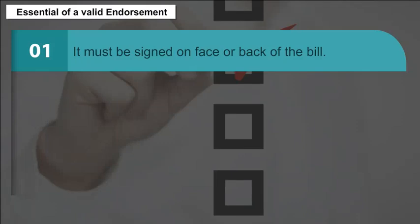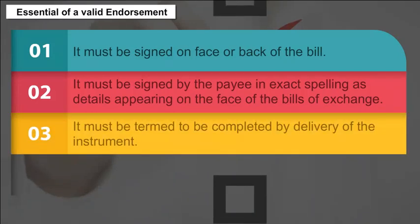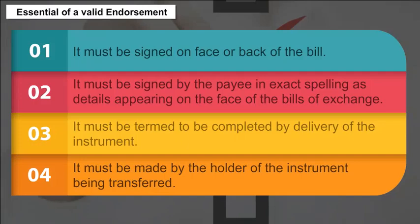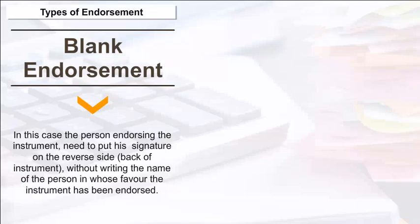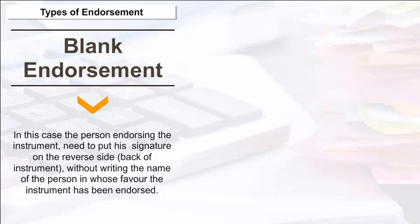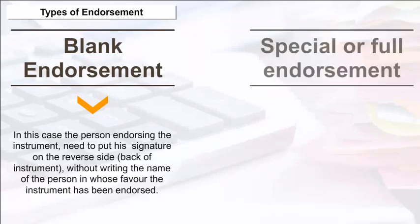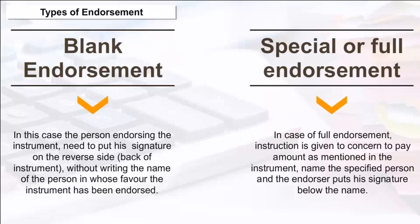Essentials of a Valid Endorsement: It must be signed on the face or back of the bill; signed by the payee in the exact spelling as it appears on the bill; completed by delivery of the instrument; and made by the holder of the instrument being transferred. Types of Endorsement: (1) Blank Endorsement — the endorser puts his signature on the reverse side without writing the name of the person in whose favor it is endorsed. (2) Special or Full Endorsement — instruction is given to pay the amount to a named specified person, and the endorser puts his signature below the name.